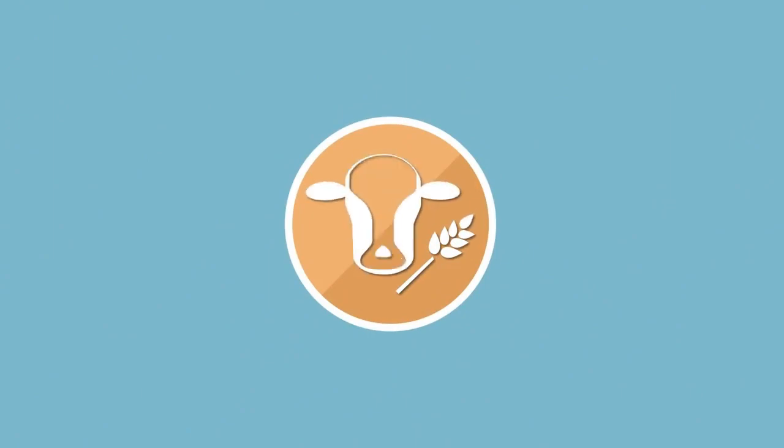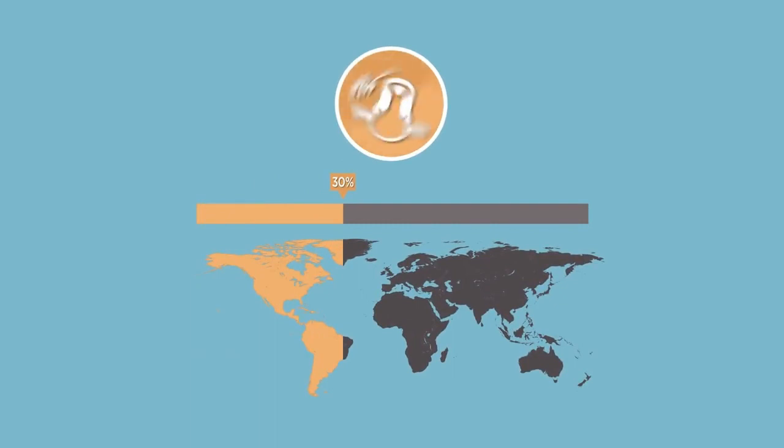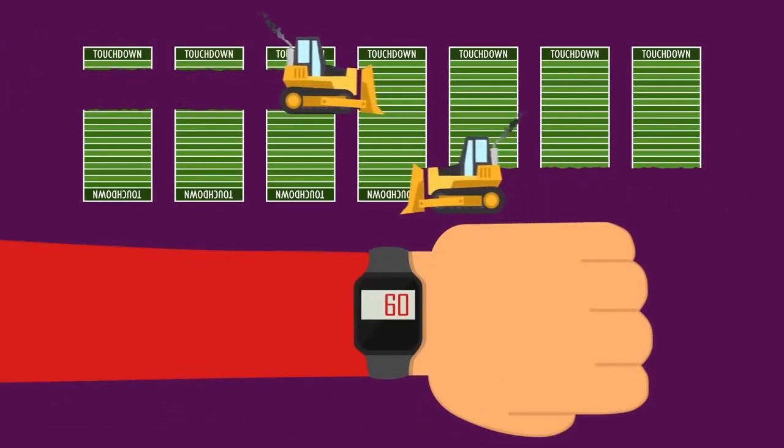Land used for growing animal feed and raising animals for food used a staggering 30% of the Earth's land mass in 2006, and the food production industry has only increased since. 7 football fields worth of land is bulldozed every minute to create more room for farmed animals and the crops that feed them.